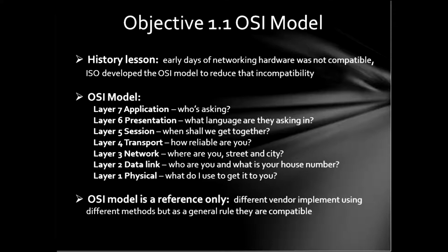The OSI model is broken up into seven different layers, layers one through seven. Usually when you see it written out and represented, it goes top to bottom — layer seven down to layer one. Layer seven is what does all the initiating and passes it down to six, down to five, down to four, down to three, down to two, down to one, out the wire and over to the other side. So layer seven is application.